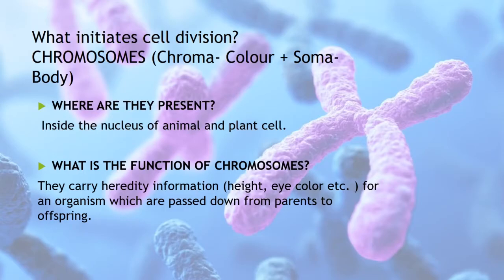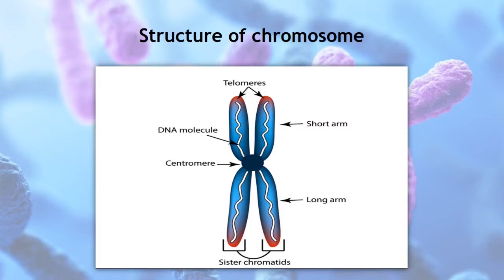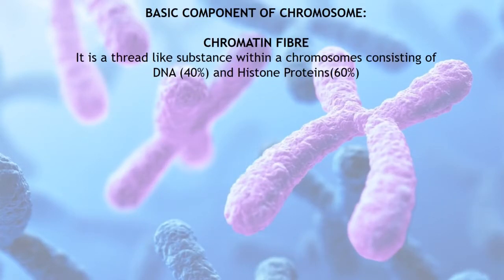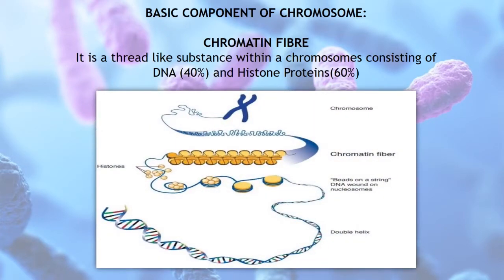A chromosome consists of two sister chromatids joined at a point called the centromere, which appears as a small constricted area along the length of the chromosome. The centromere serves to attach to the spindle fiber during cell division. Chromosomes are highly coiled and condensed chromatin fibers. These chromatin fibers are thread-like substances present within a chromosome, and they consist of DNA and histone proteins.